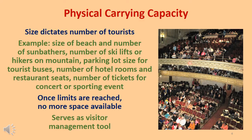The physical carrying capacity of a destination, including its various subcomponents, addresses its size limits, which dictate the number of visitors that can be accommodated at any one time. Examples are the size of a beach for sunbathers, number of ski lifts on a mountain, parking lot spaces for tour buses, number of hotel rooms and restaurant seats, and number of tickets that can be sold to a concert or sporting event. Once these limits are reached, there is simply no more space available or the conditions no longer comply with safety regulations, so the physical carrying capacity has reached its upper limit. In this regard, the physical carrying capacity also serves as a visitor management tool.